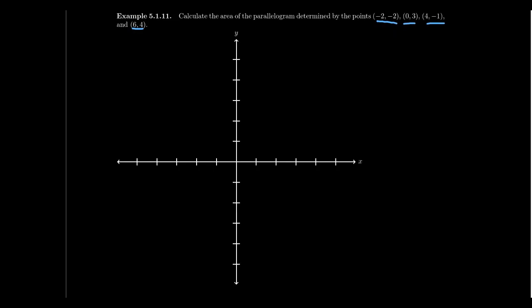So there is the point negative 2, negative 2 right there. There is the point 0, 3 right here. There's the point 4, negative 1 right there. And then there's the point 6, 4, which is this one right there. In which case, if we connect the dots, you can see that we have, in fact, formed a parallelogram. I mean, it's not perfectly drawn, but that's the right idea.